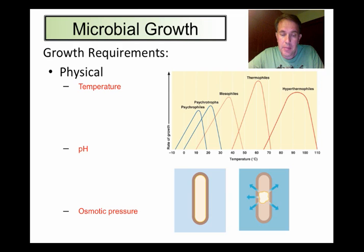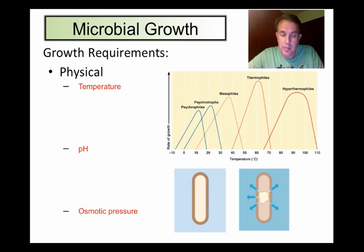With respect to temperature, most microbes have a relatively narrow range of temperatures in which they can grow and survive. Most microorganisms that we're familiar with grow well at temperatures that are also favored by humans, namely around body temperature, 37 degrees.